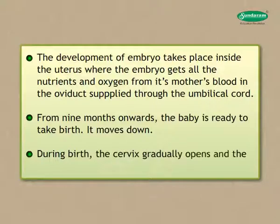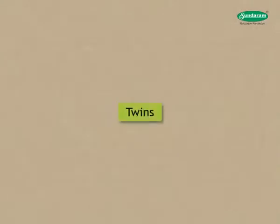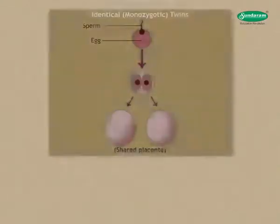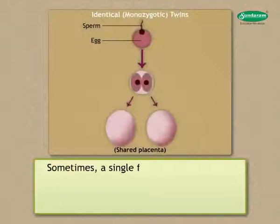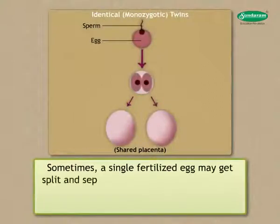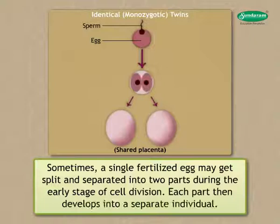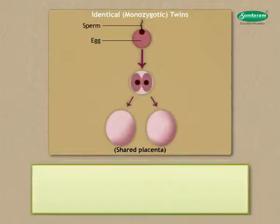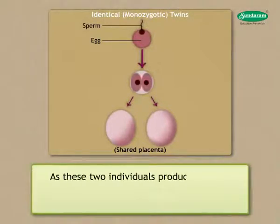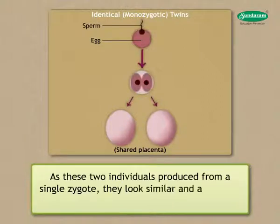After nine months, the baby is ready to be born. It moves down, the cervix gradually opens, and the baby is released through the vagina. Sometimes a single fertilized egg may split and separate into two parts during the early stage of cell division. Each part then develops into a separate individual — since they come from a single zygote, they look similar and are called identical twins, either both boys or both girls.